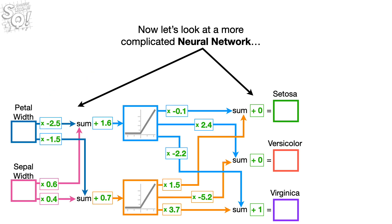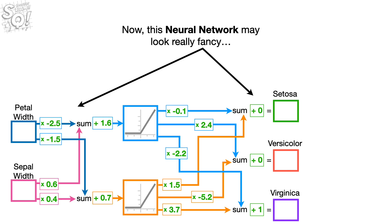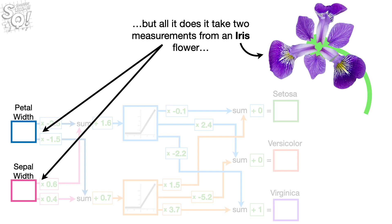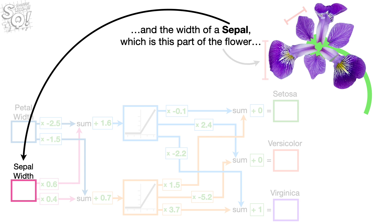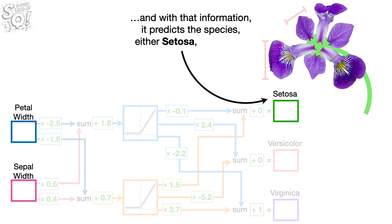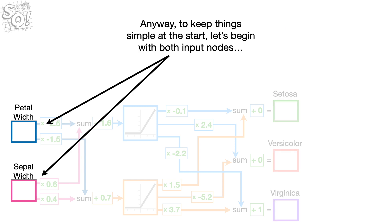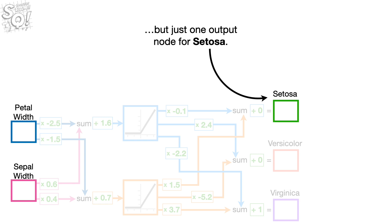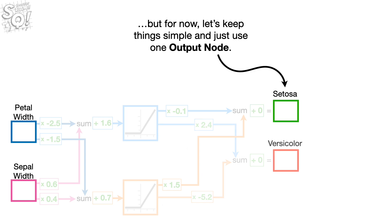Now let's look at a more complicated network that has more than one input node and more than one output node. This neural network takes two measurements from an iris flower: the width of a petal and the width of a sepal, and with that information, it predicts the species — either Setosa, Versicolor, or Virginica. To keep things simple at the start, let's begin with both input nodes but just one output node for Setosa. Later on, we'll add the other two output nodes.